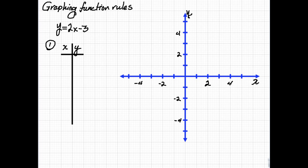Let's start with the function y equals 2x minus 3, and we'll make a table, and we'll just pick some random x's. We want to pick x's that are going to fit on the graph, so we'll start by picking negative 2, negative 1, 0, 1, and 2.